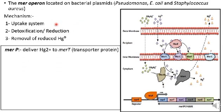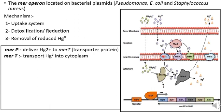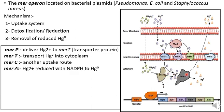In the uptake system, mercury enters the periplasm via non-specific porin proteins. Inorganic mercury binds to mer-P, a periplasmic extracellular binding protein, which then transports mercury to mer-T, mer-C, and mer-F — mercury transporter proteins that move mercury into the cytoplasm. In the cytoplasm, detoxification occurs: mer-A detoxifies mercuric ions through a reduction-catalyzed process to a non-toxic elemental form of mercury, which then leaves the bacterial cell by passive diffusion.